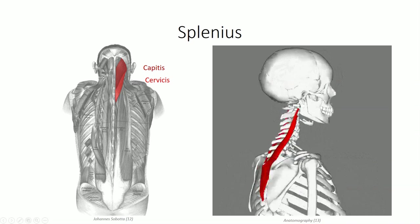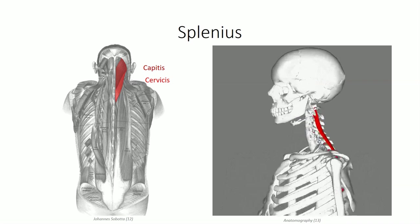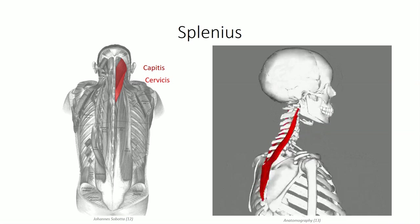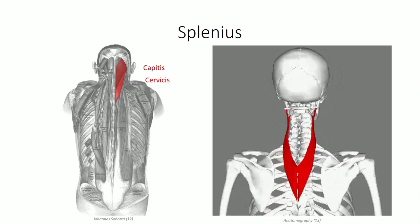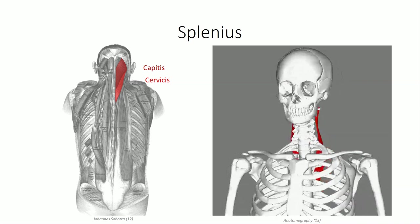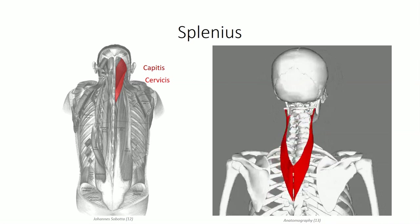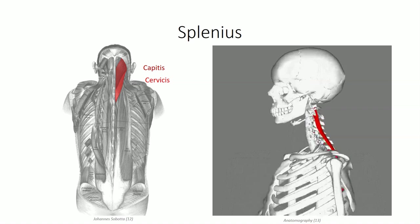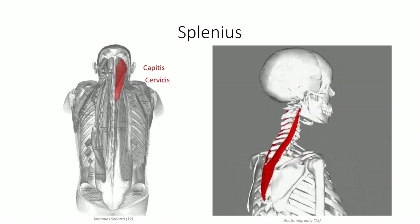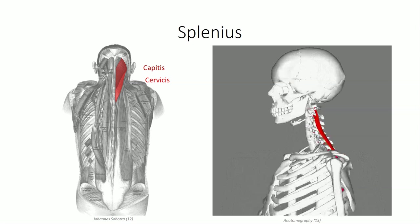As is typical of intrinsic back muscles, innervation is supplied by segmental dorsal rami off the cervical and upper thoracic spinal nerves. These muscles contract bilaterally to extend the cervical vertebrae. Selective unilateral contraction results in ipsilateral rotation and lateral flexion.